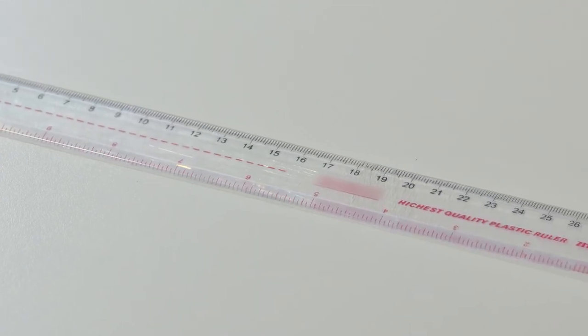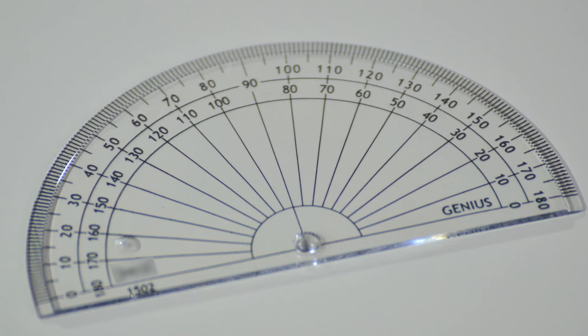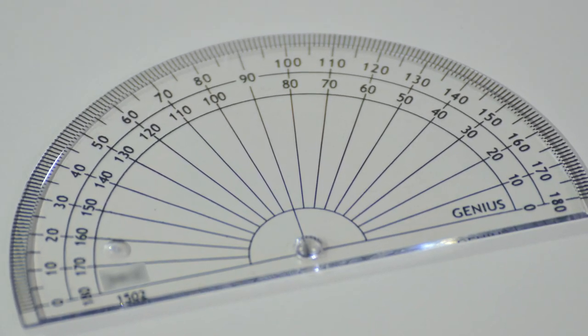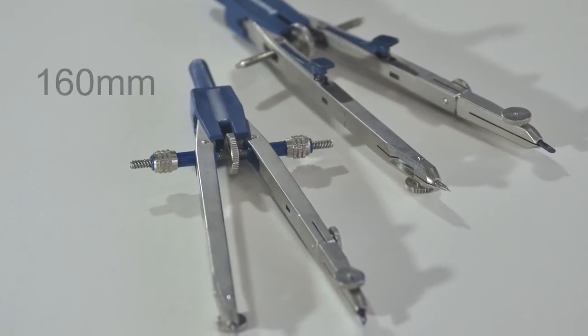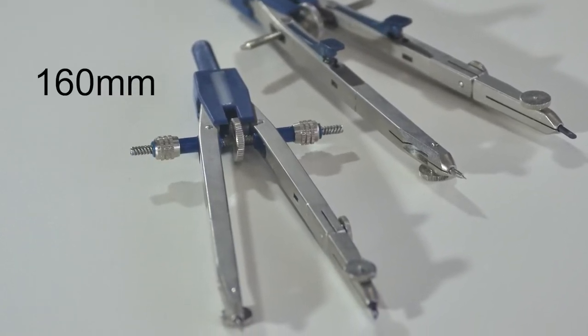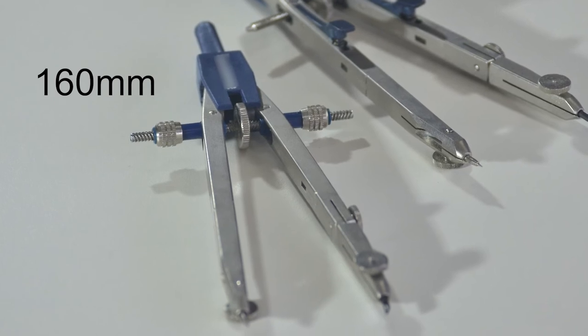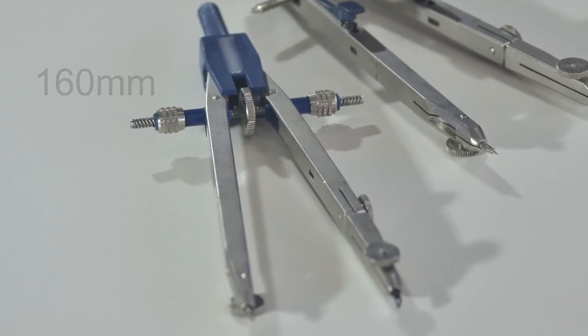We need a ruler and a protractor. We also need a compass—it has to be a sturdy one that opens 160 millimeters from tip to tip, because we will be drawing some large arcs.